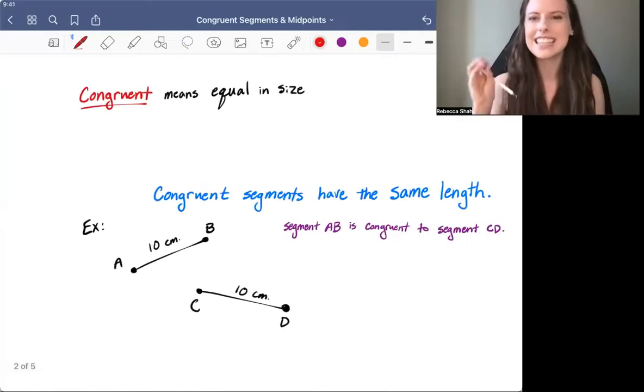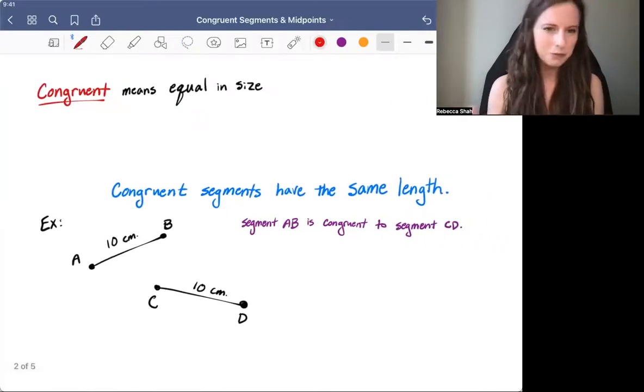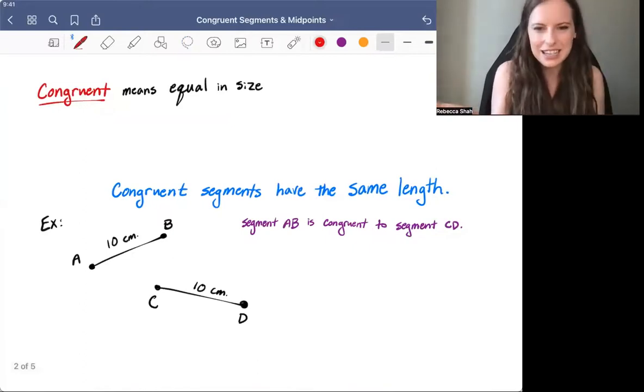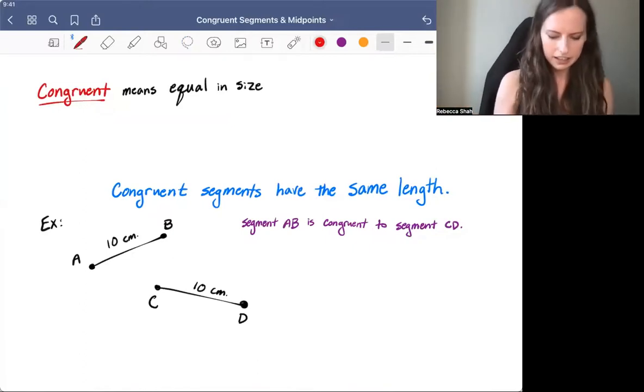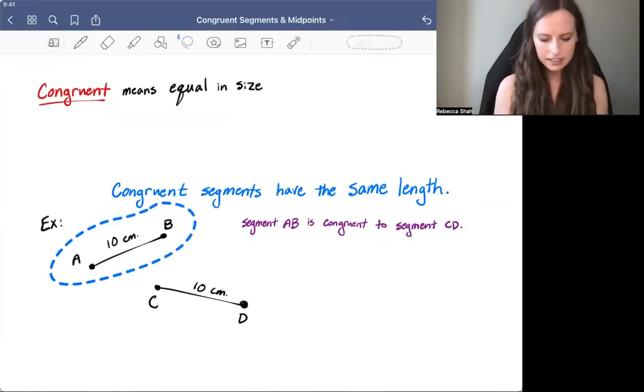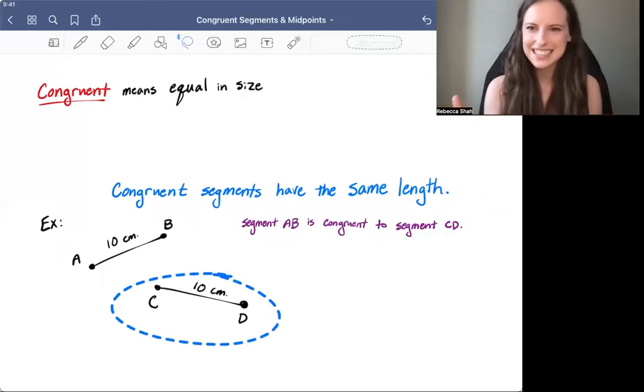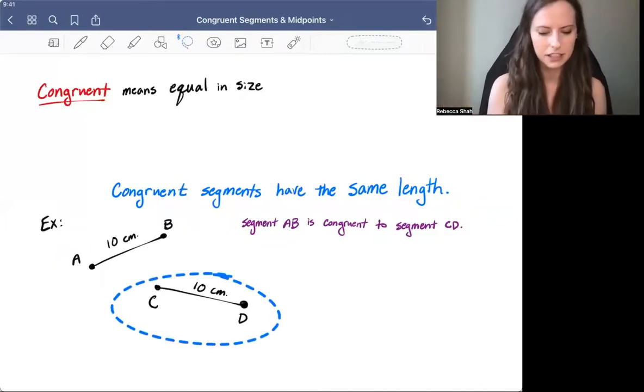Congruent just means equal in size. Congruent segments have the same length. In this diagram, we can see segment AB is congruent to segment CD because they both have a length of 10 centimeters.